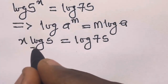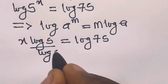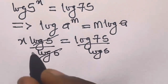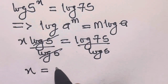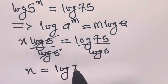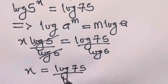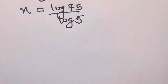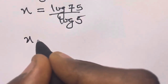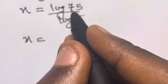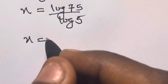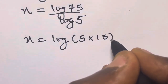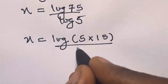So here we divide both sides by log 5. This cancels out, so we have x equals log 75 divided by log 5. We can write 75 as 5 times 15, so x equals log of 5 times 15, divided by log 5.